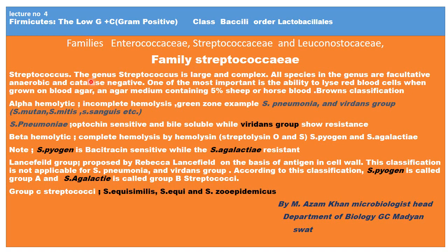Within family Streptococcaceae, we first discuss the genus Streptococcus. The genus is large and complex. All species are facultative anaerobes and catalase negative — unlike Staphylococcus aureus, which is catalase positive. One of the most important properties of Streptococcus is the ability to lyse red blood cells when grown on blood agar medium containing 5% sheep or horse blood.